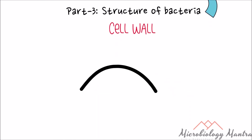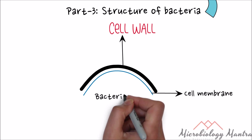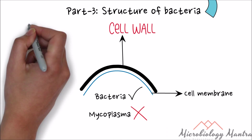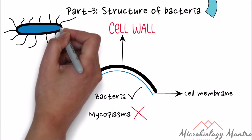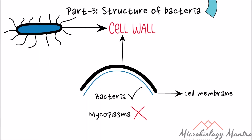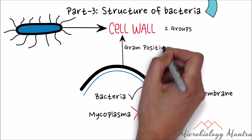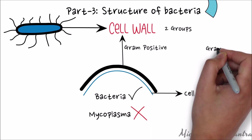Cell wall is an external layer present just above the cell membrane. Cell wall is present in all bacteria except Mycoplasma. It is a rigid structure that gives shape to the bacterial cell. Based on the cell wall structure, bacteria are divided into two groups called gram-positive and gram-negative bacteria.